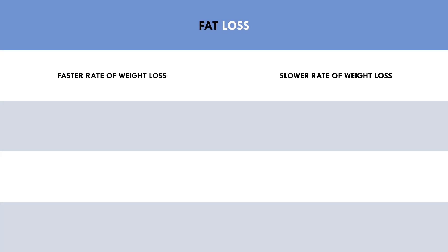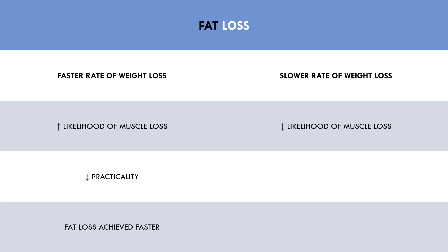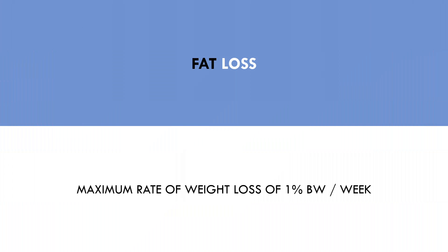Generally speaking, a faster rate of weight loss increases the likelihood of muscle loss and is less practical in terms of lifestyle and behavior. However, weight loss will be achieved in a faster time frame. On the other hand, a slower rate of weight loss is generally more effective for muscle retention or even muscle gain, and more practical in terms of behavior and lifestyle, though this takes a longer time frame for the trainee to meet their goals. As a practical recommendation, it is advised that a maximum rate of weight loss of around 1% of body weight per week shouldn't be exceeded. While this is the fastest rate of loss that is recommended, there is no minimum rate of loss — this is only limited by your individual time frame and personal choice.